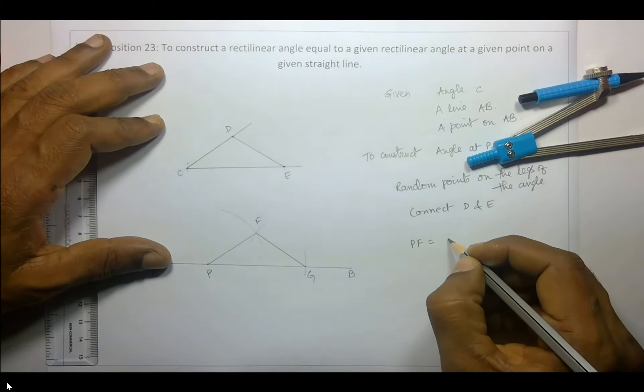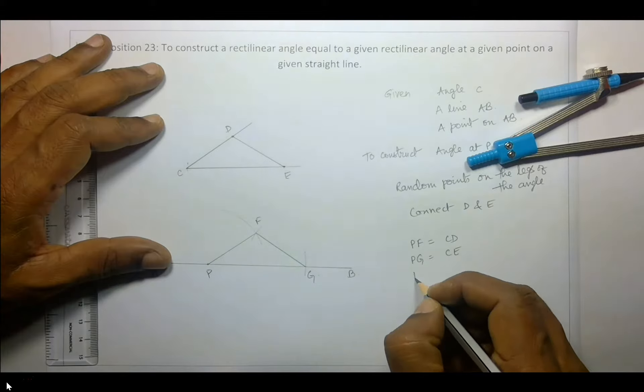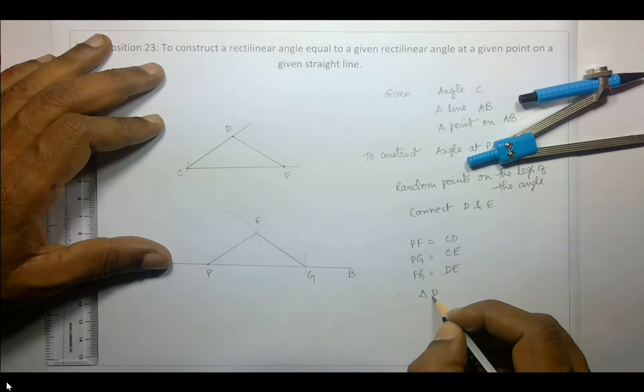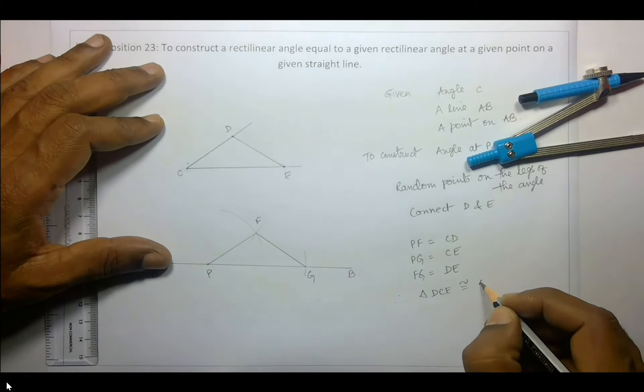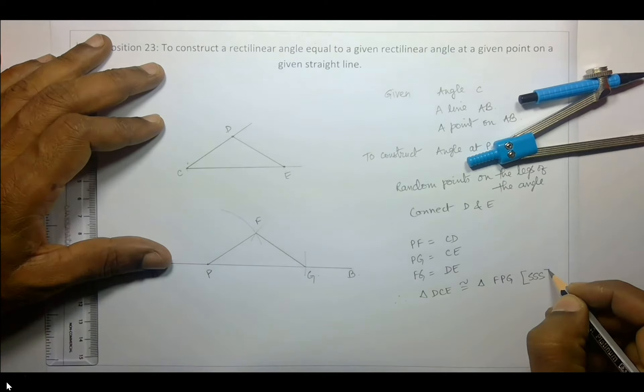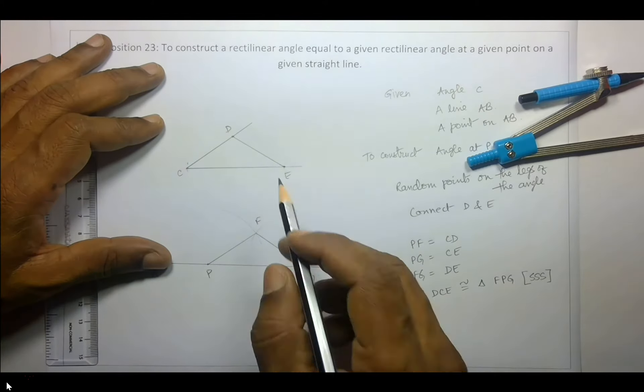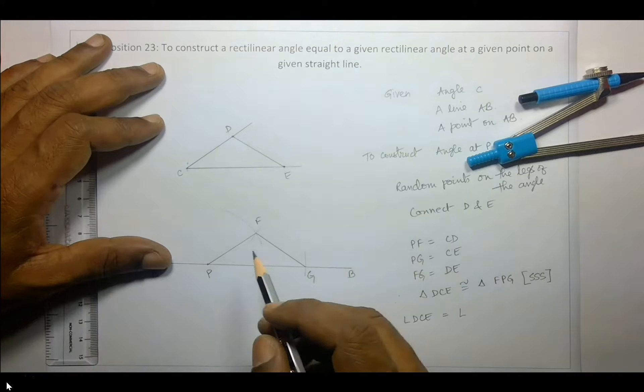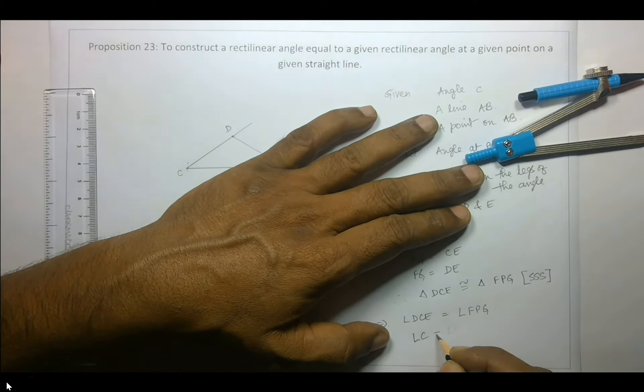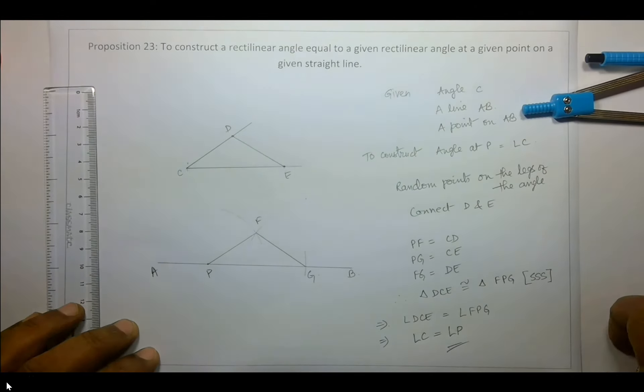Now PF is equal to CD, PG is equal to CE, FG is equal to DE. So therefore triangle DCE is congruent to triangle FPG. Which rule? SSS. So basically this implies that angle DCE is equal to angle FPG, or I can write it as angle C is equal to angle P, which is what we had to construct. So that is proposition 23.